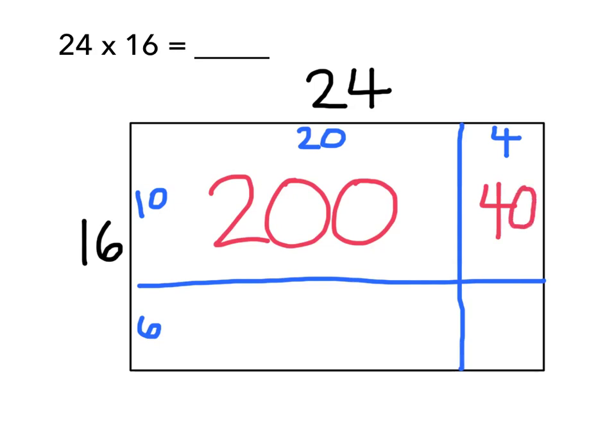Next, I'm going to try to figure out what this part of my array is equal to. I already have one dimension labeled 6, and I can see that this dimension here is the same as this dimension here, so it must be 20, which means I have a 20 by 6 array, and 20 times 6 is, 10 times 6 is 60, so 20 times 6 will be 120. Lastly, I need to figure out what this piece is equal to. I know that this dimension is 6, and I know that this dimension is 4 based on the other rectangles, which means that this is 6 by 4, or 24.